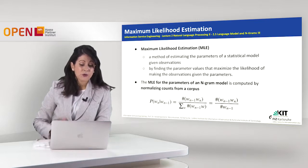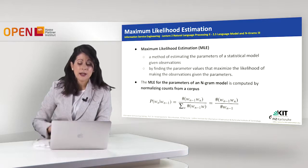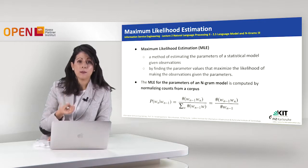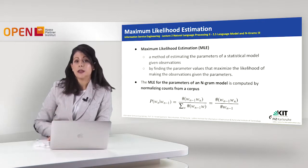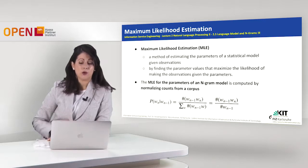So if we want to compute the conditional probability of a word W sub n, given that the word W sub n-1 is already there, what we have to do is count how many times this specific bigram — meaning the word W sub n-1 and the word W sub n — come together, divided by the count of just the word W sub n-1 in the corpus.